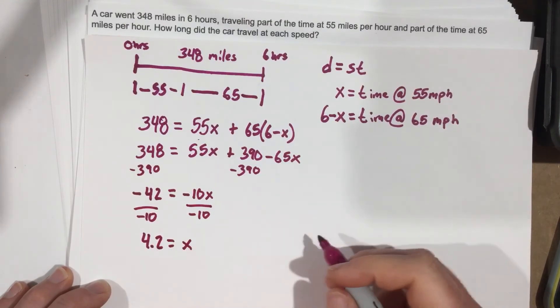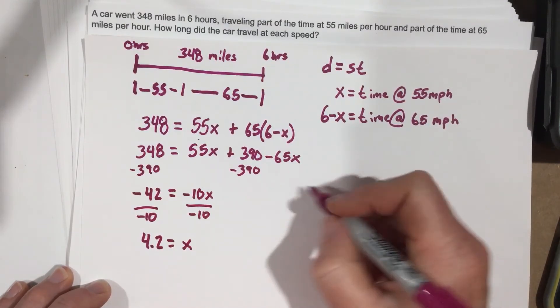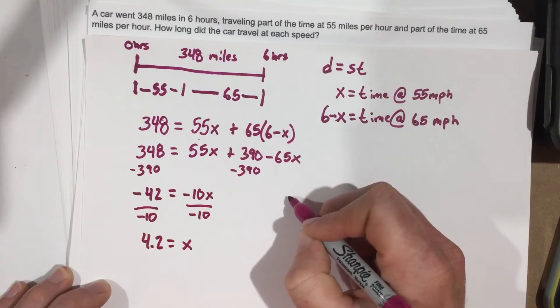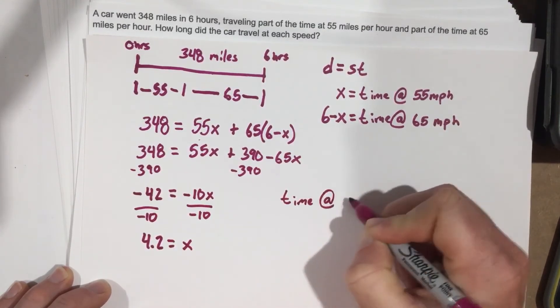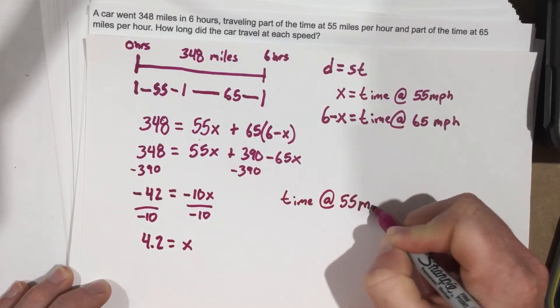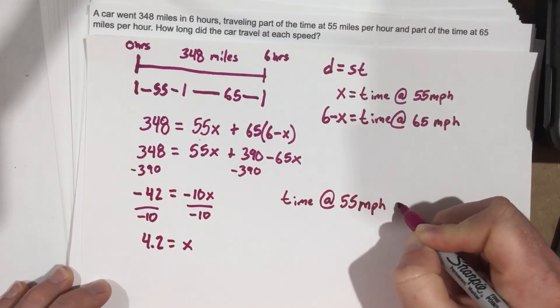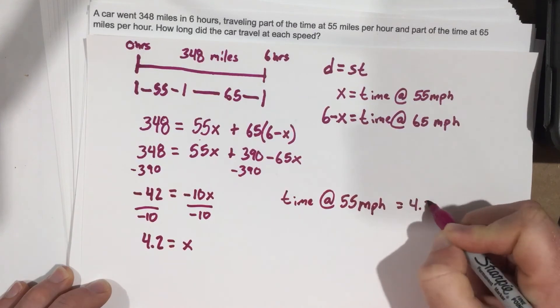And this is 4.2 hours. So our time at 55, we're going to write that here, time at 55, remember X is time at 55 miles per hour, equals 4.2 hours.